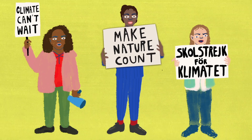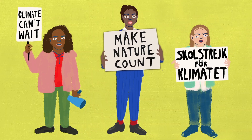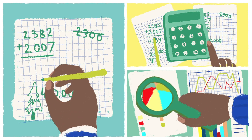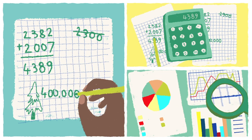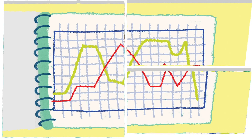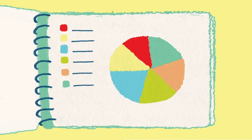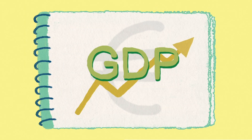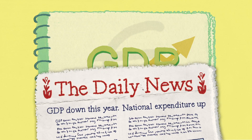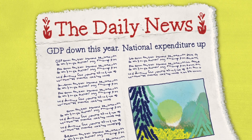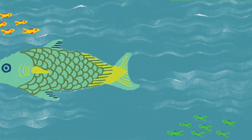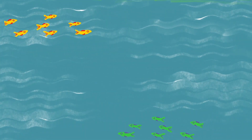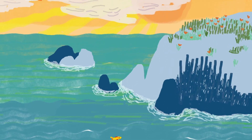Accountants could be the new activists. Accounting is the practice of recording financial transactions and reporting the results. Every day, decisions are made on the back of clear and accurate accounts, so accounting can be a powerful tool. Every country maintains national accounts — this is how we get measures like national expenditure and GDP.